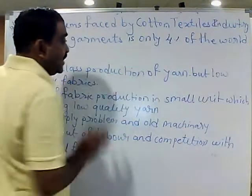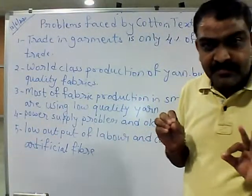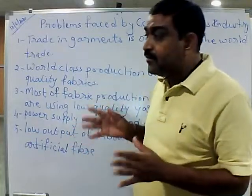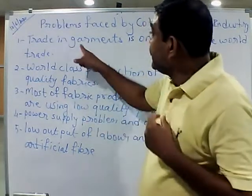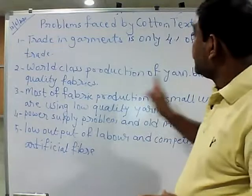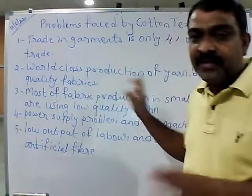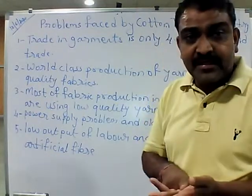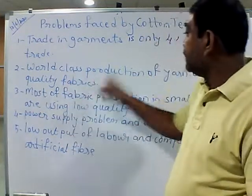The next issue is that India has world-class production of yarn — dhaaga — but we are having low-quality fabric. Yarn and garment are different things. Yarn is thread, then it becomes fabric, and then garment. India's spinning mills produce world-class quality yarn. But the problem is we are having low-quality fabric because most of the mills in our country are using low-quality machinery.